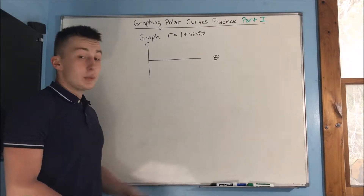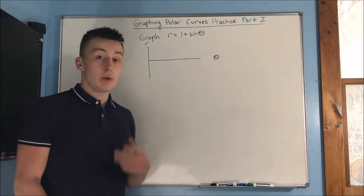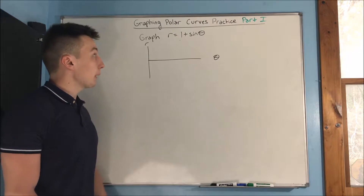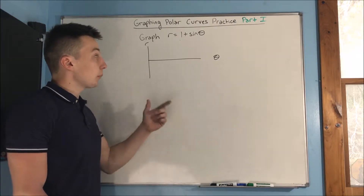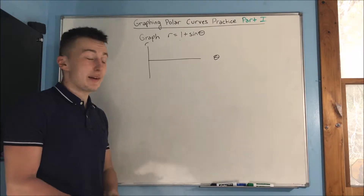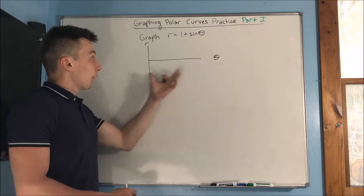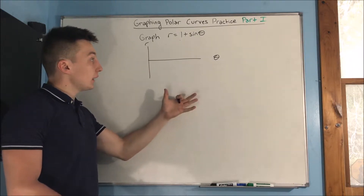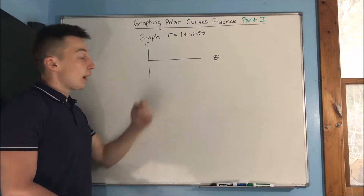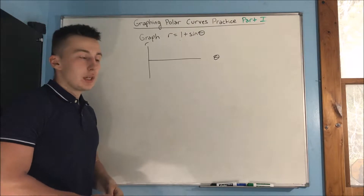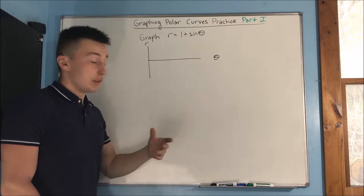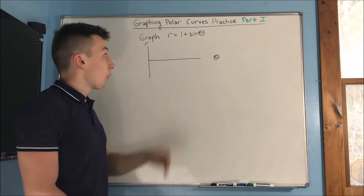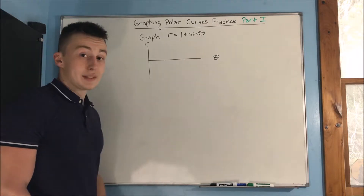In this video, we're going to be doing some practice with graphing polar curves. We have our first problem up on the board: graph r equals 1 plus sine theta. The first thing we should do is view r and theta as Cartesian coordinates and graph them as such, so we can get a better idea of what a polar curve is going to look like for r equals 1 plus sine theta.